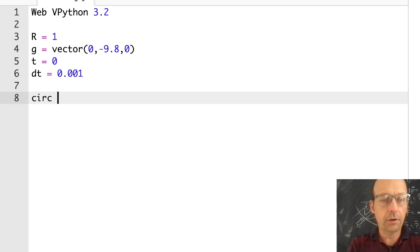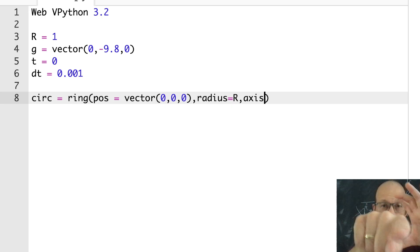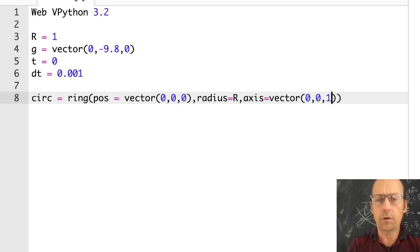So I'm going to call this circ. It's a circle, which is, there's a ring object in VPython, and I'm going to use that. So it has a couple properties. Position is the location of the center. Radius is the radius. And then axis is the vector axis that is centered on. So position is vector 0, 0, 0. Radius is equal to r. Axis is going to be, if I want it like this, the axis is the z direction. Axis is vector 0, 0, 1. Let's run it.